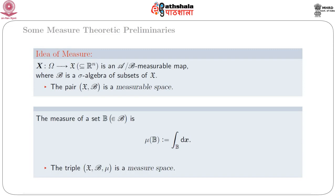Thus, we get the double (script X, script beta), which is called a measurable space, and the triple (script X, script beta, mu), which is called a measure space.